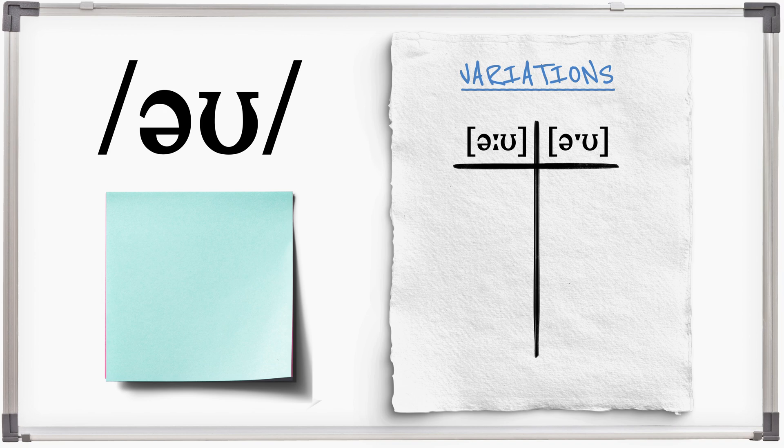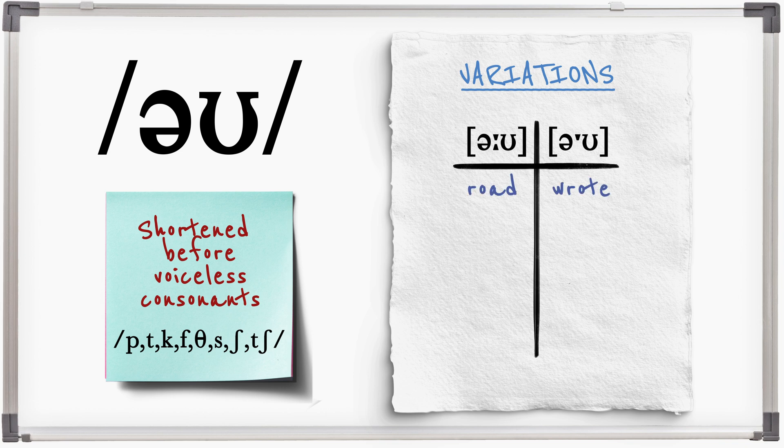O is a long sound so it will be shortened before voiceless consonants. Compare: rode, rote, loathe, loathe, robe, rope, doze, dose.